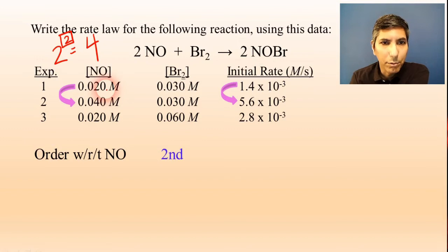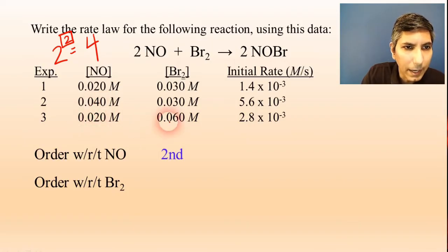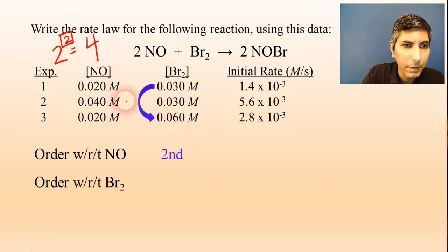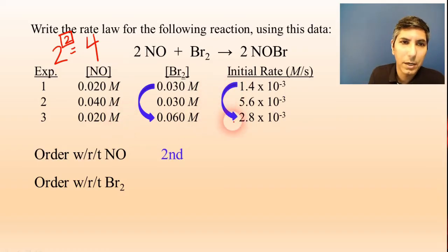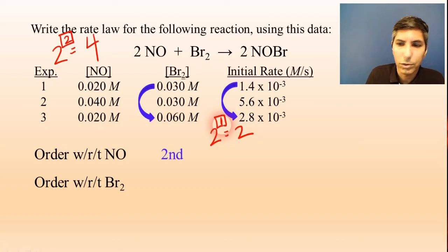Now let's do the same for bromine. Experiments one and three are the best choice because bromine is doubling from experiment one to three while NO is constant. The rate also doubles from experiment one to experiment three. If we double the concentration and the rate also doubles, the order is first order. So bromine is first order.